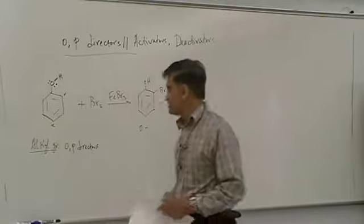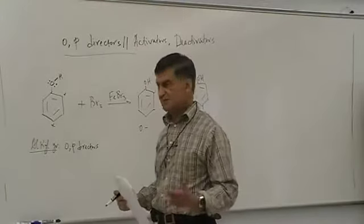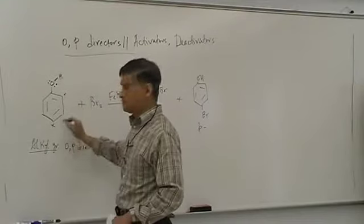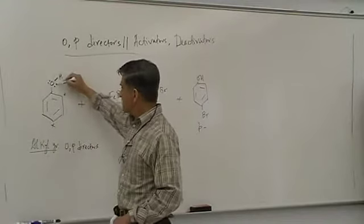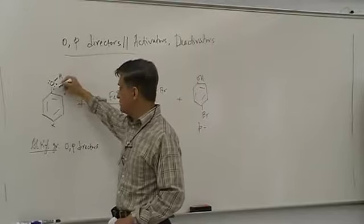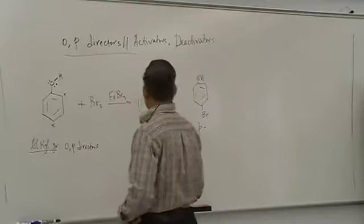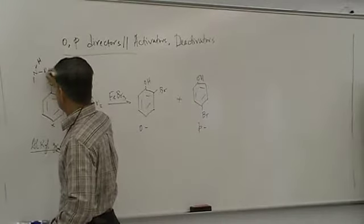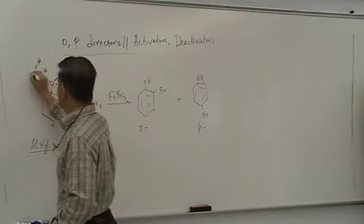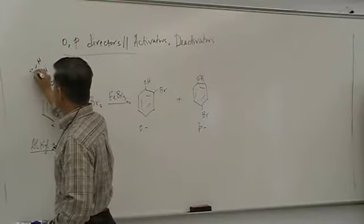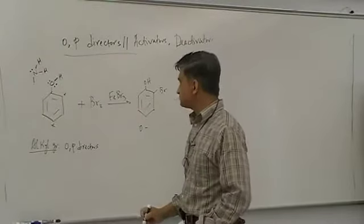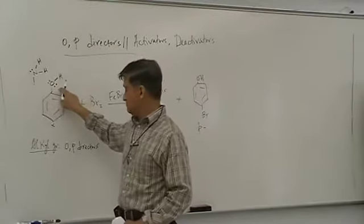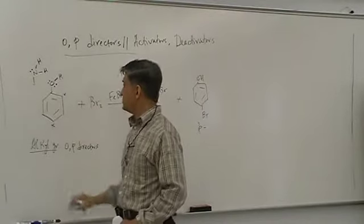If a group has unshared pairs of electrons on the atom directly bonded to the benzene ring, it will be an ortho-para director. For example, NH2 — nitrogen has a pair of electrons — is also ortho-para directing. So keep in mind: any group bonded to the ring where the directly bonded atom has a non-bonding electron pair will be an ortho-para director.